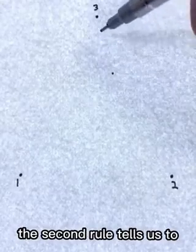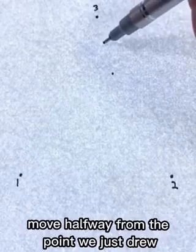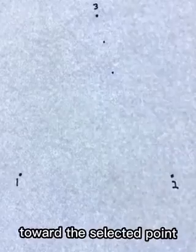Now, we'll draw more points by repeating two simple rules over and over. The first rule tells us to randomly select one of the original three points. For example, suppose we choose three. The second rule tells us to move halfway from the point we just drew toward the selected point and draw another point.